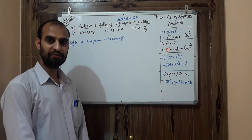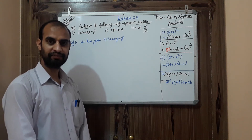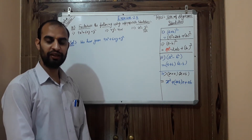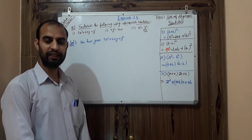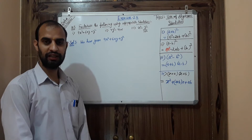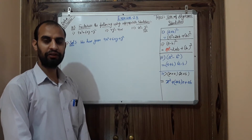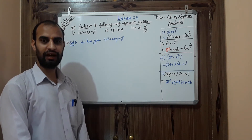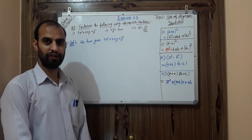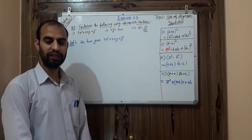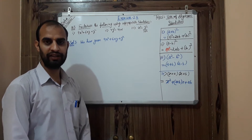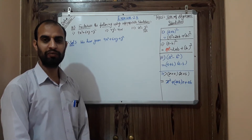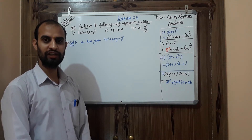Welcome to my student in the digital learning class of mathematics. As you all know, we are in Chapter 2, that is Polynomials, and now we are using identities in polynomials — how we can use them for factorization or for multiplication.